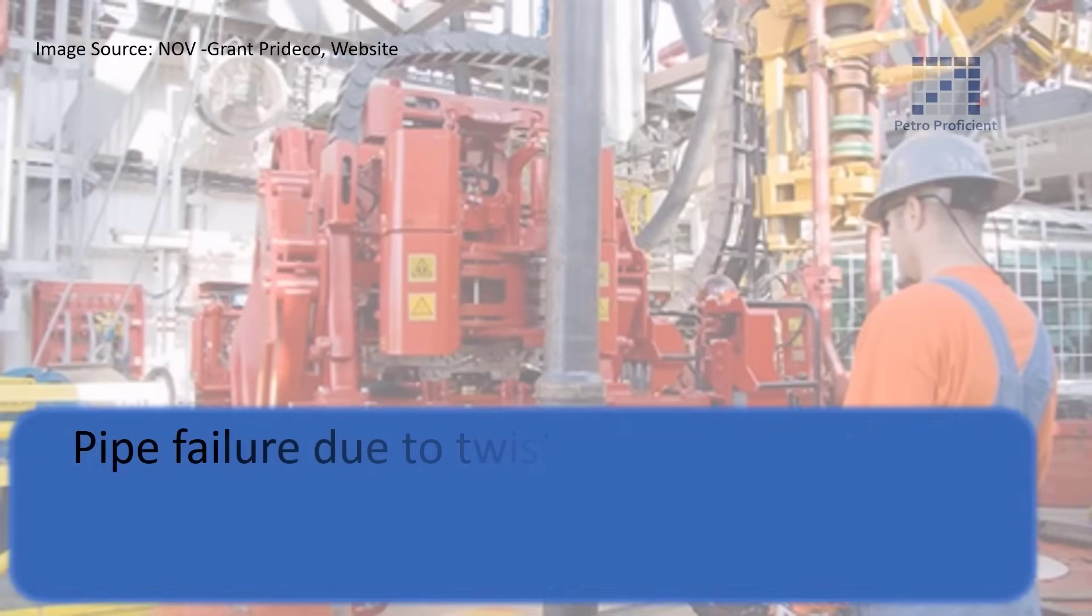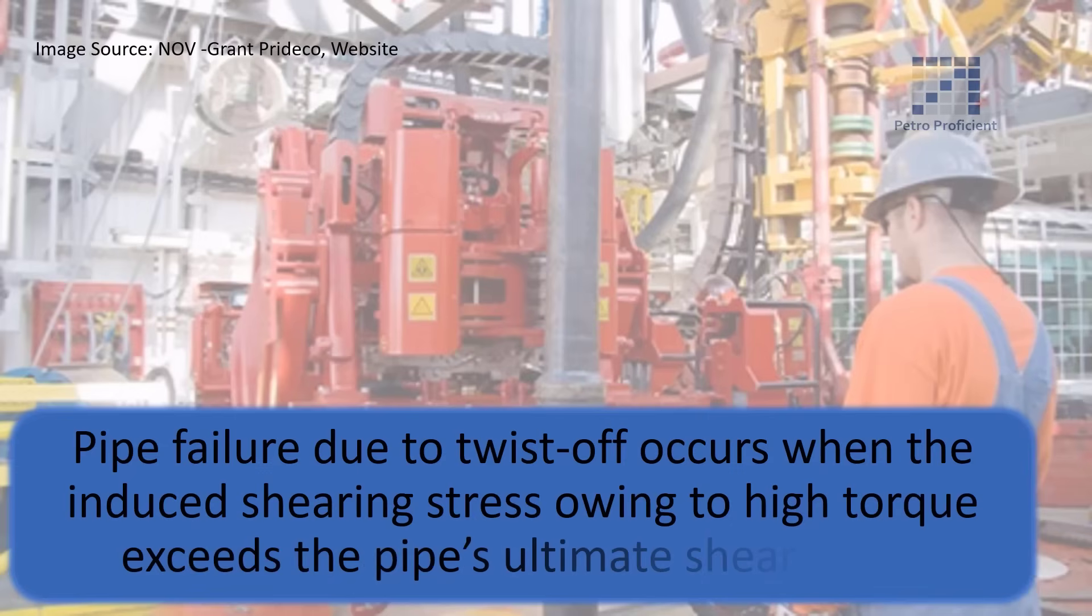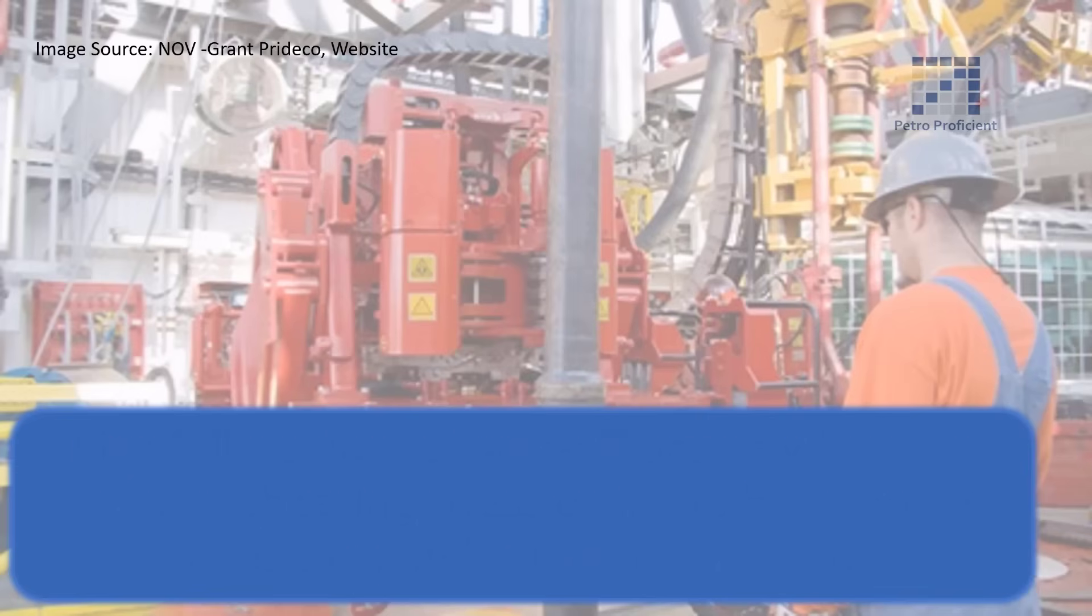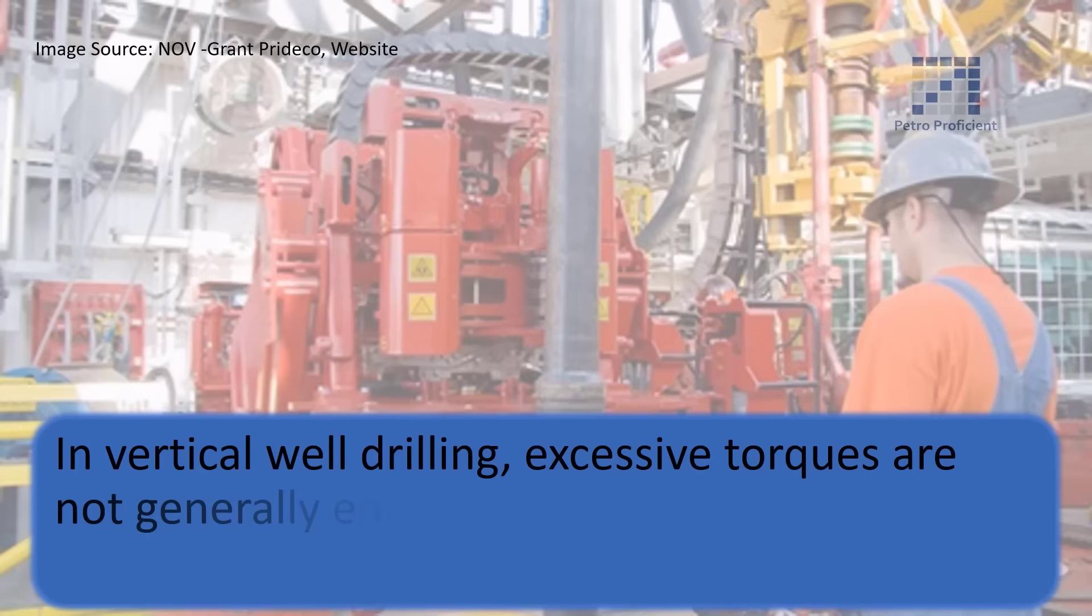Pipe failure due to twist off occurs when the induced shearing stress owing to high torque exceeds the pipe material's ultimate shear stress. In vertical well drilling, excessive torques are not generally encountered under normal drilling practices.